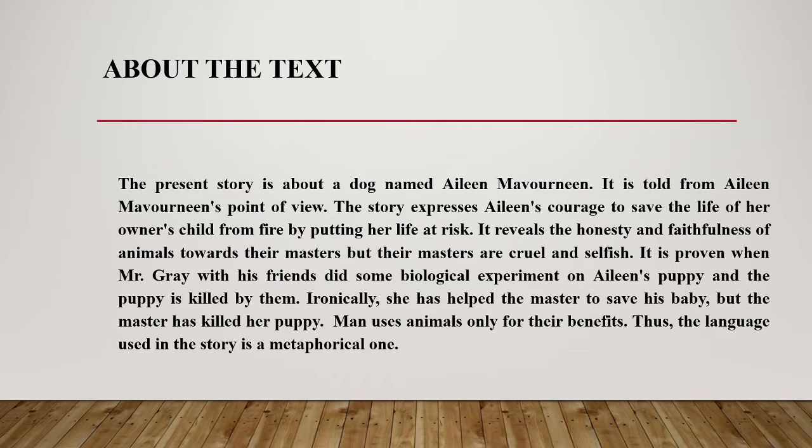Ironically, Aileen helped the master save his baby, but the master killed her puppy. Man uses animals only for their own benefit and selfish interest. Thus, the language used in the story is a metaphorical one.